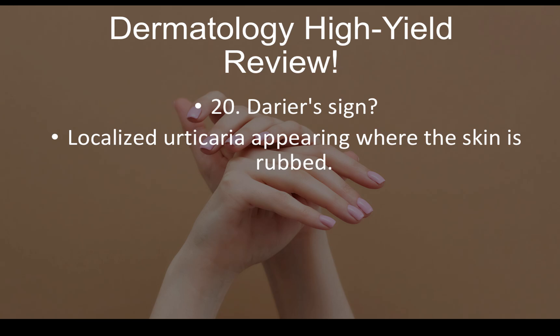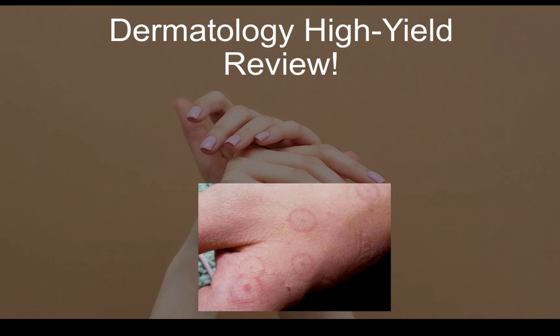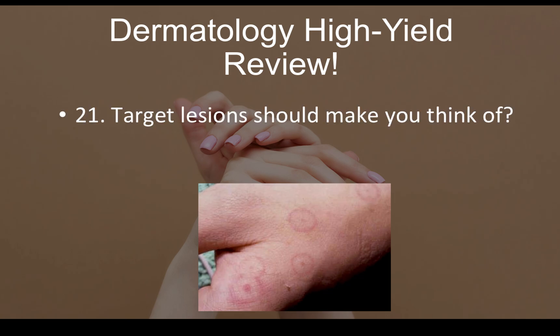Question number twenty: what is Darier's sign? It is a localized urticaria appearing where the skin is rubbed. If somebody runs their finger along their skin, you can see the red marking where the fingernail was drawn — that is Darier's sign.